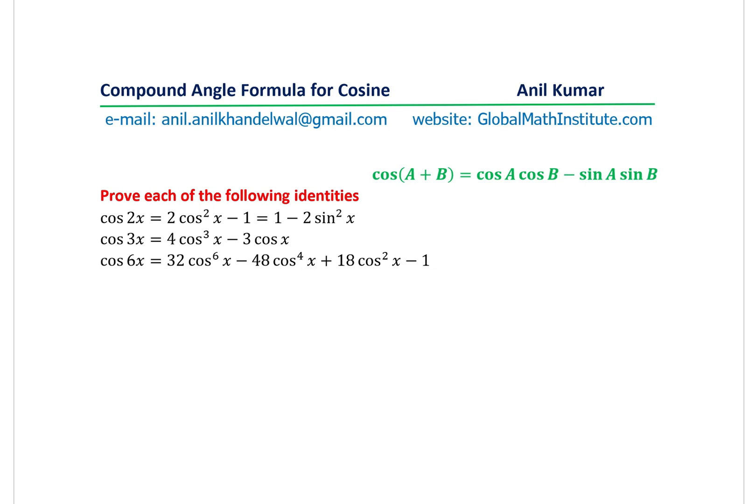In this particular video we will understand the strategy how to do such questions. We will begin with the compound angle formula for cos(A + B) which is given right here. And then from here we are going to prove the identities for cosines. First we will have cos 2x, then cos 3x, and then cos 6x.